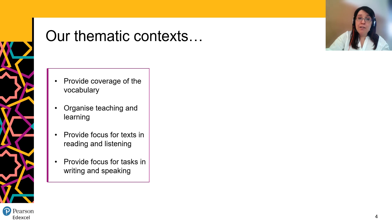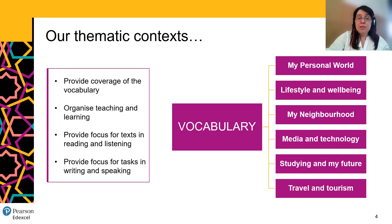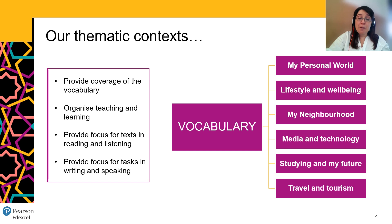So we have all the vocabulary, and these are the thematic contexts that they can be organised into. We have: my personal world, lifestyle and wellbeing, my neighbourhood, media and technology, studying and my future, and travel and tourism. Hopefully those thematic contexts feel quite relatable and familiar, but also give you a sense of the range that will be included in this new qualification.